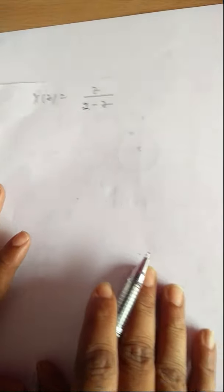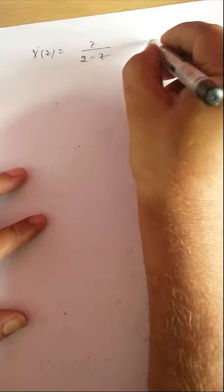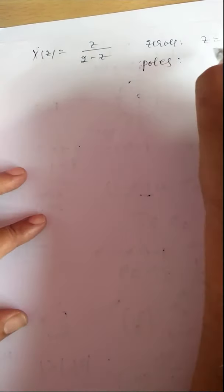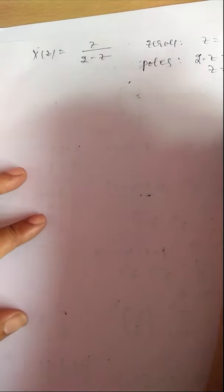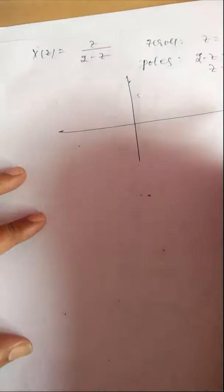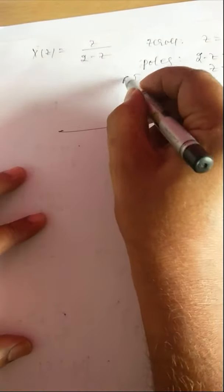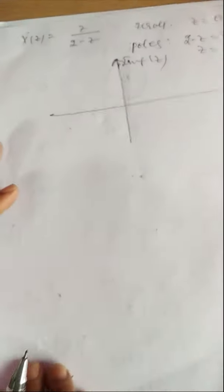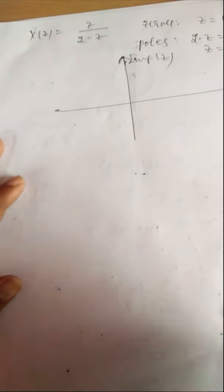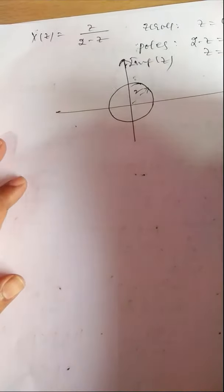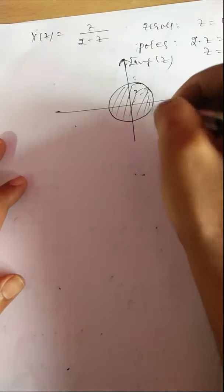So X(z) = Z/(2-Z). Zeros: the numerator Z = 0, so it has one zero at Z = 0. Poles: 2 - Z = 0, so Z = 2 — one pole at Z = 2. Plotting the ROC: |Z| < 2 means we draw a circle with the origin as center and radius 2. The ROC is inside the circle.